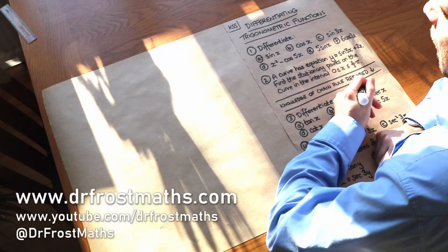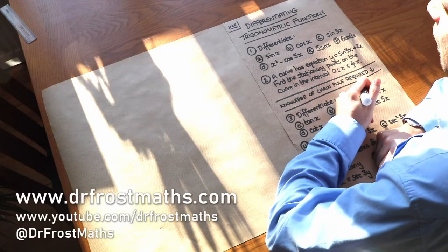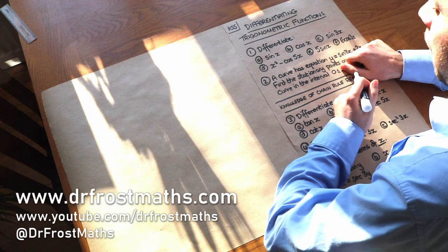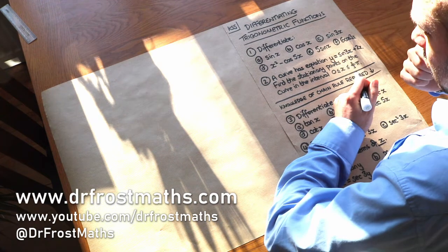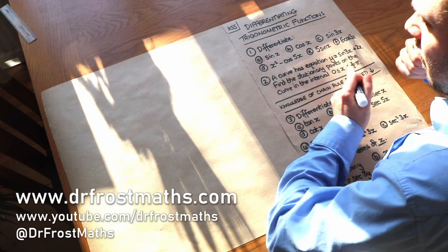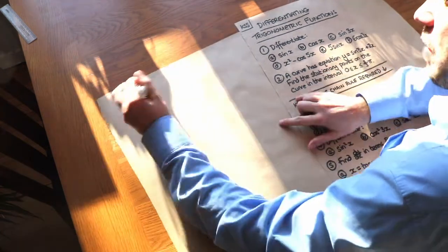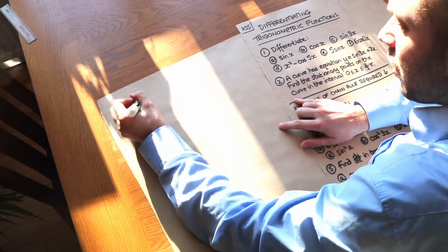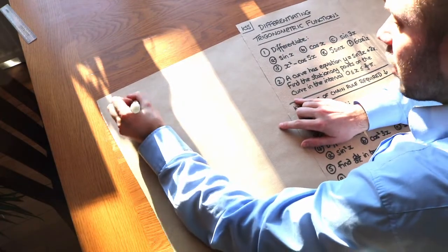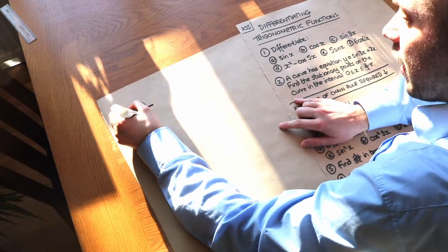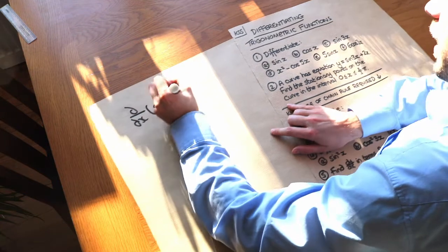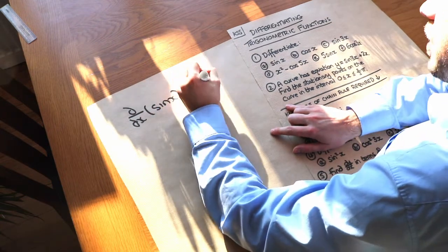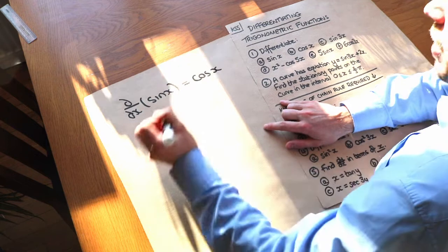Hello and welcome to this Dr. Frost's Maths video on Key Stage 5, Differentiating Trigonometric Functions. There are only two things you actually need to remember here, and all the rest we can derive from them. When you differentiate sine of x, you get cos of x, and I proved that from first principles in another video.